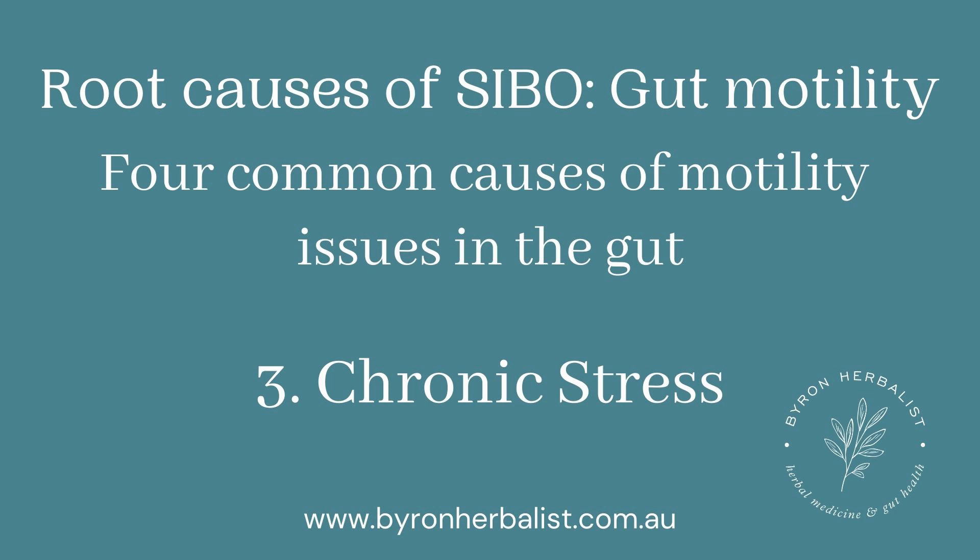Number three, we've got chronic stress. Chronic stress can lead to poor gut motility. The big point here is that the nervous system and the nerves that innervate a lot of our digestive tract — particularly the vagal nerve — function optimally in the rest-and-digest side of the nervous system, that parasympathetic side. We're calm, we're eating, we're digesting our food, breaking it down, absorbing nutrients. So chronic stress is something that needs to be addressed if you have SIBO.